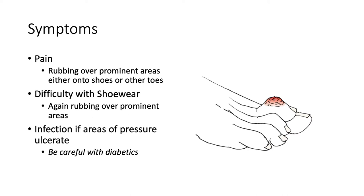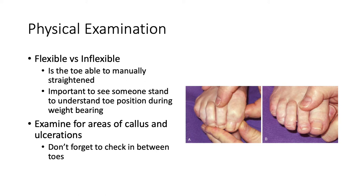Symptoms include pain, usually rubbing over the prominent areas either onto shoes or other toes, difficulty with shoe wear, and sometimes infection if areas of pressure ulcerate. This is a big consideration in patients who are insensate and neuropathic, especially diabetics. In physical examination, the most important thing to understand is whether the toe can be manually straightened — that is, is it flexible or rigid?